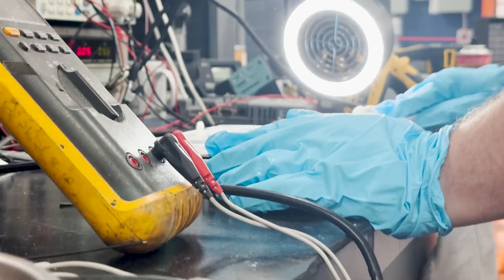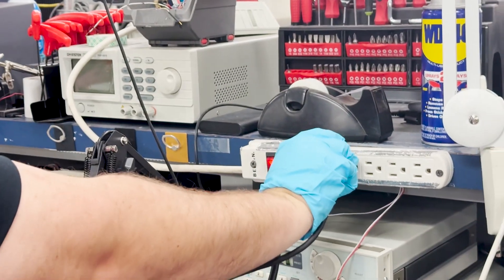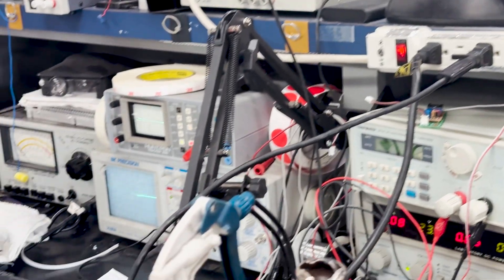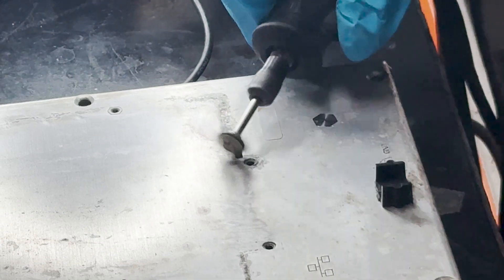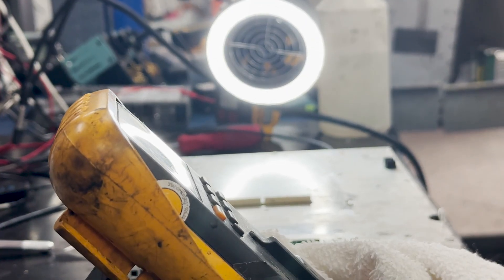To prepare the screen for reassembly, we will employ specialized cleaning agents and techniques to remove any residual adhesive and corrosion from the rear surface. Additionally, we will utilize a fine abrasive to gently buff out any cosmetic imperfections or contaminants, restoring the surface to its original condition.